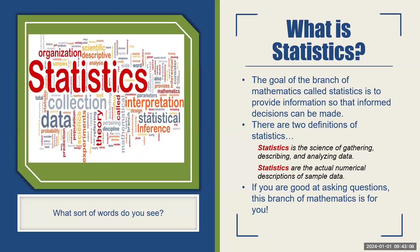What a lot of people think of is it's a bunch of data, and while that is true, there are actually two definitions of statistics. The first is a literal science of gathering, describing, and analyzing data — it is a branch of mathematics. The second definition is the actual numerical descriptions of sample data.